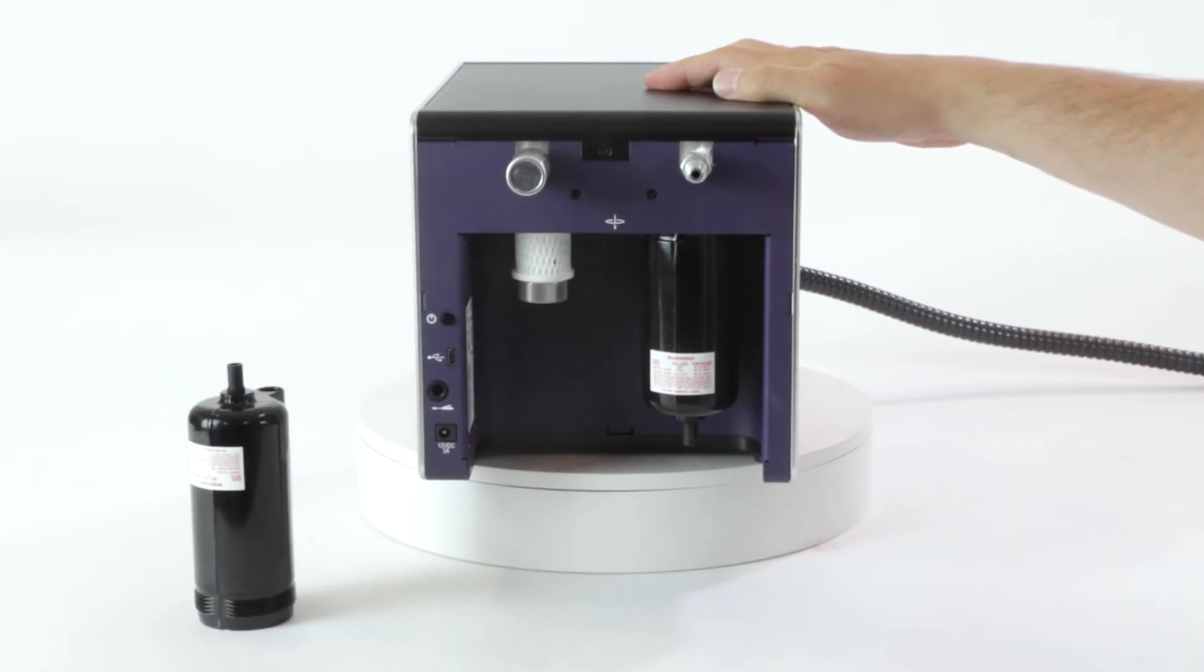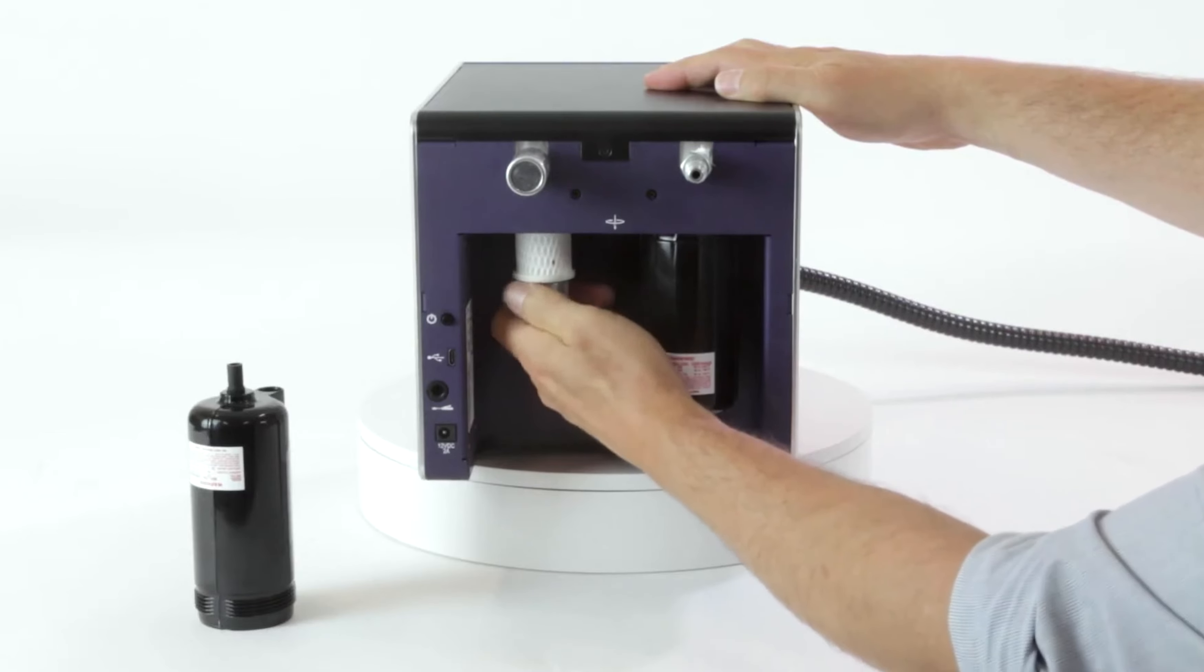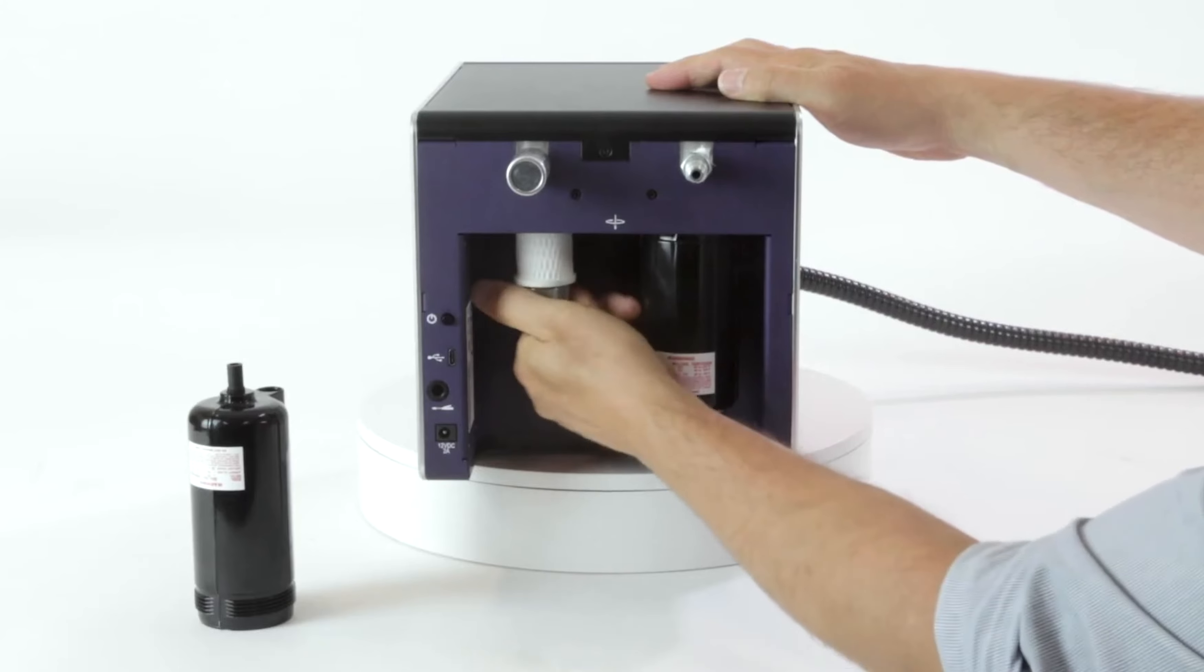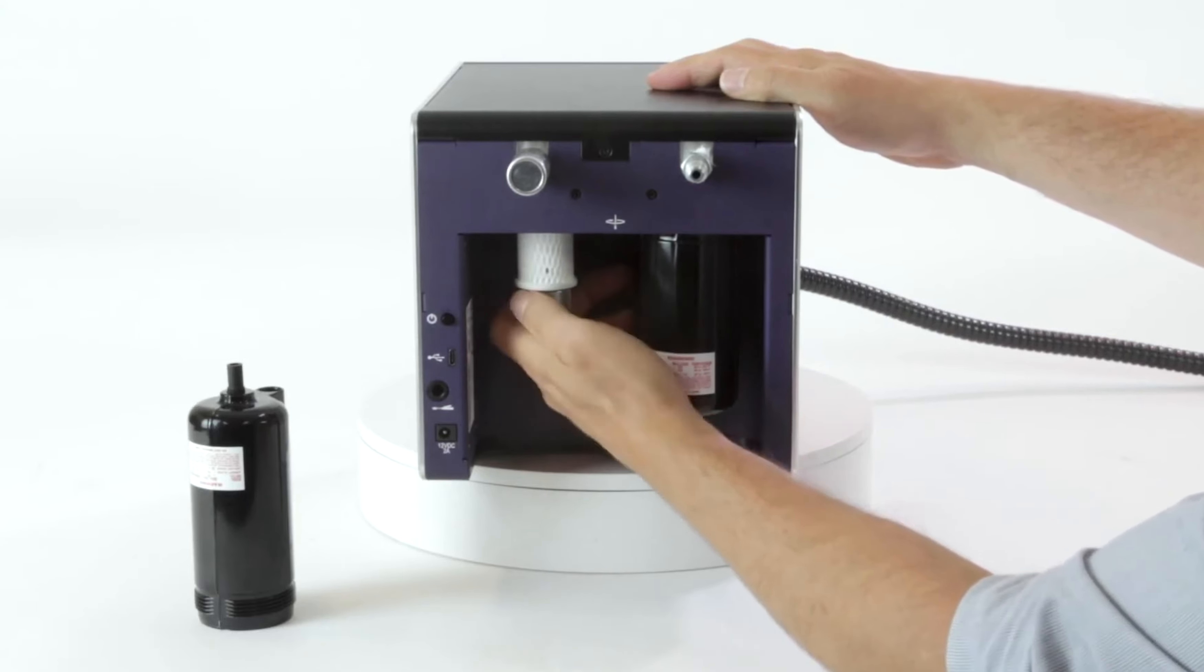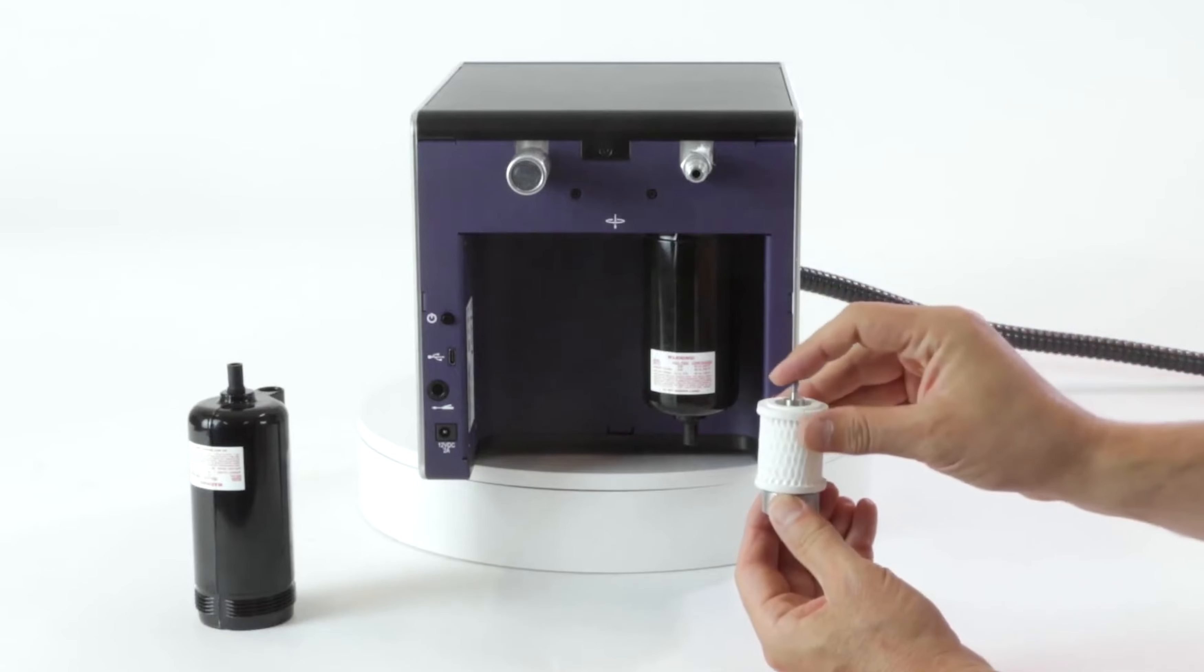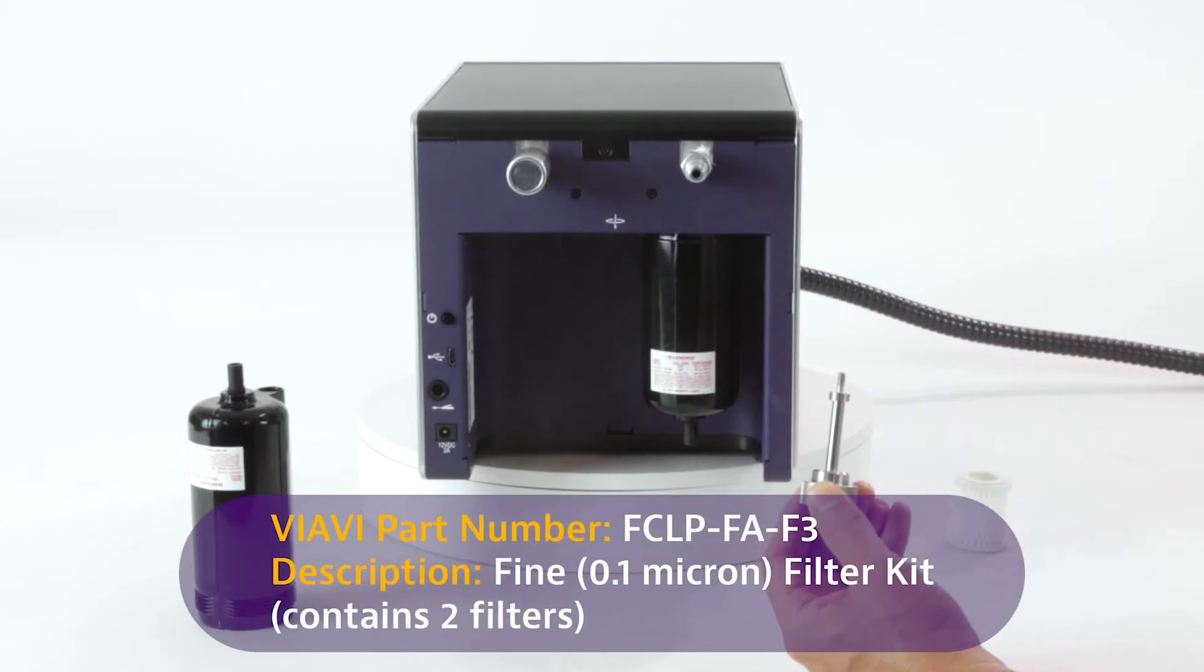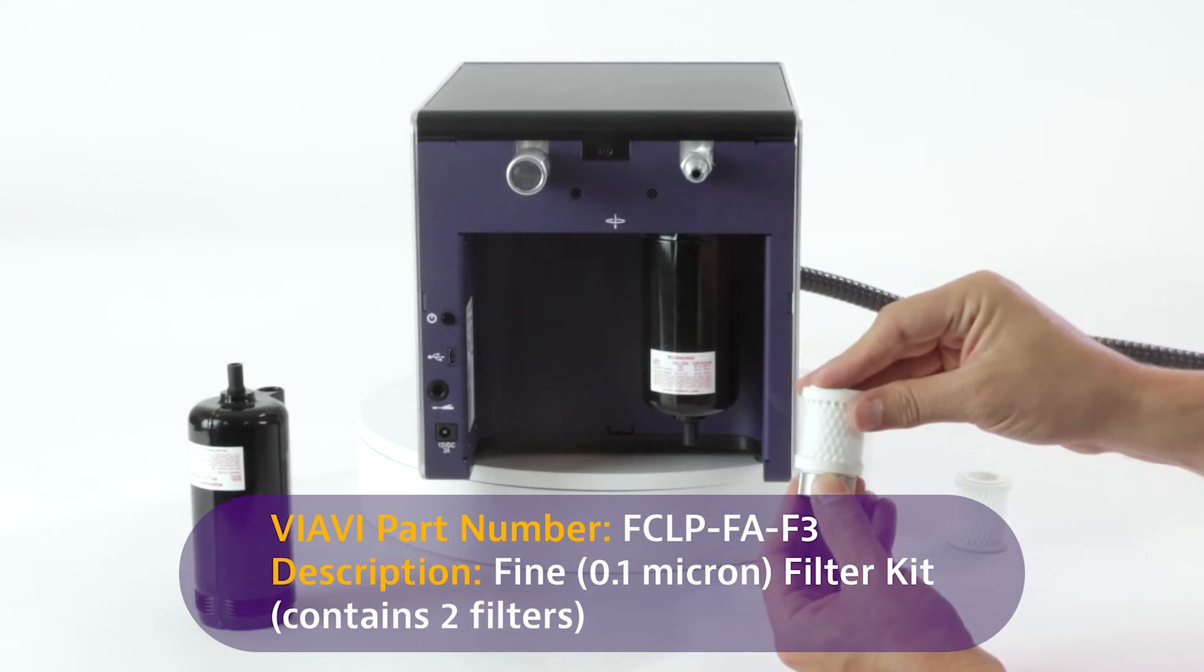Once the canister is removed, you can turn the thumbscrew on the bottom of the fine air filter to loosen it. Now I've made the fine air filter accessible. I remove it from the thumbscrew and I replace it with the new one.